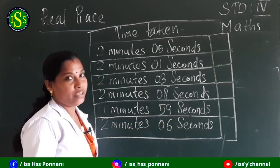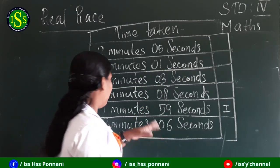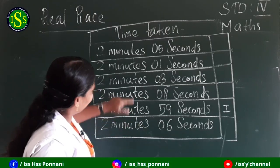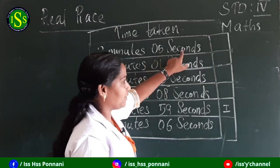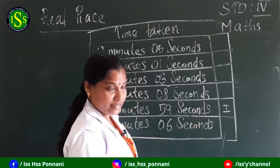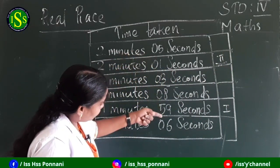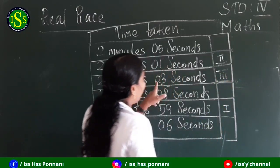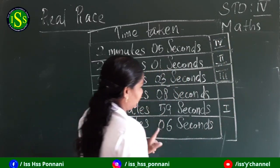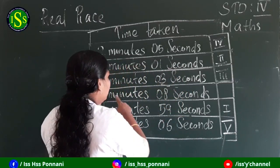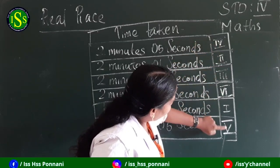The first runner's time is 1 minute 59 seconds. Then the second runner's time, then the third — three seconds more. The fourth runner next, then the fifth, and the sixth runner's time is 2 minutes 8 seconds. So all six runners' times are listed: first, second, third, fourth, fifth, sixth.